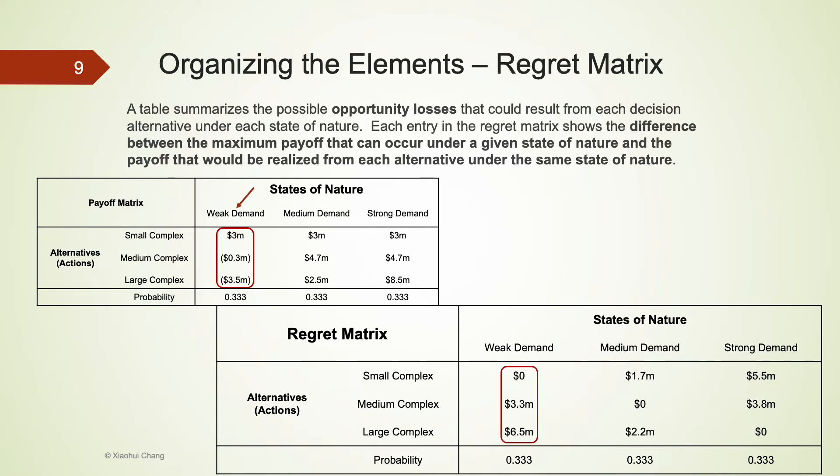For example, when the demand is weak, from the payoff matrix, we can see that the best action is to build a small complex. If the company indeed builds a small complex, there will be no regret, and the opportunity loss is $0. However,